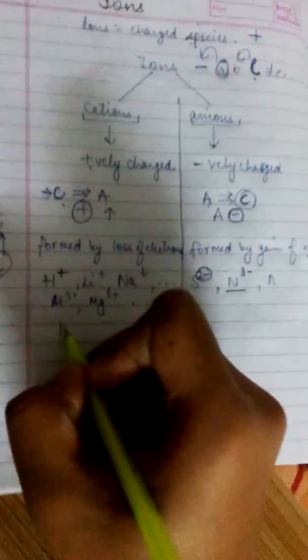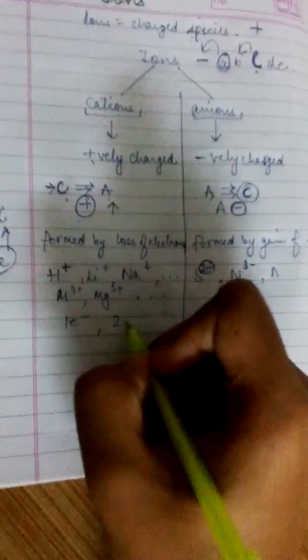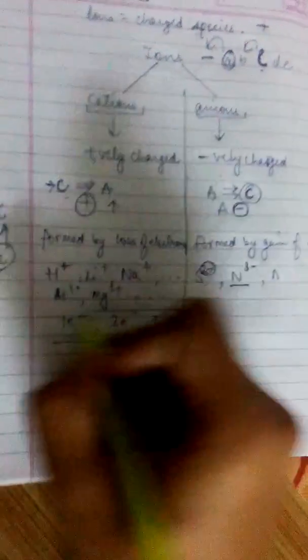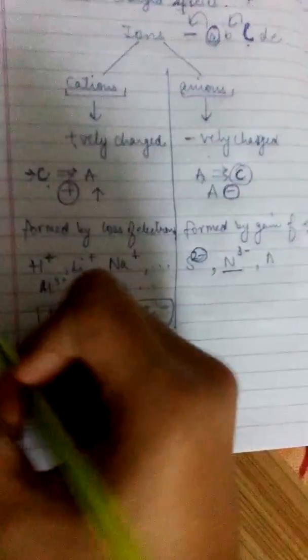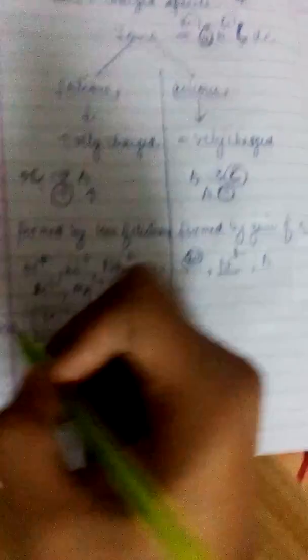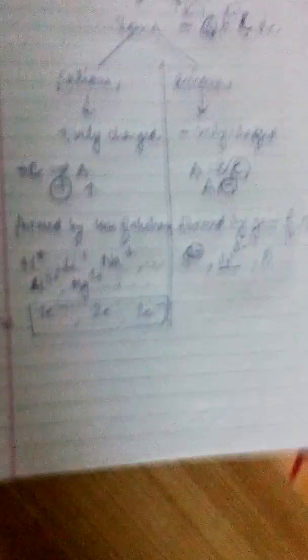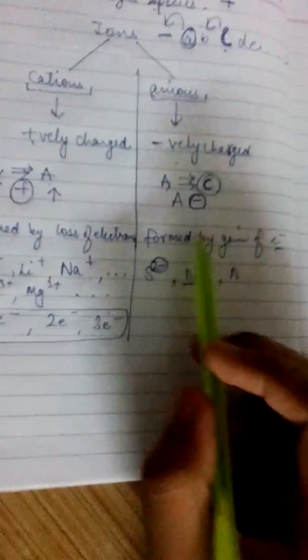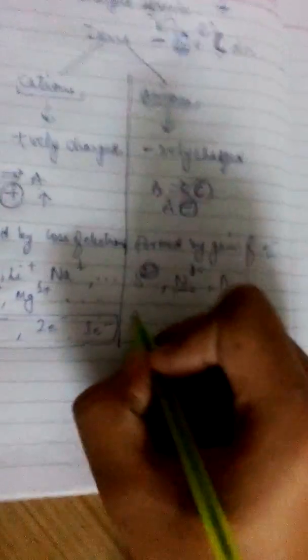There are various categories of cations. The ones which lose one electron, which lose two electrons, which lose three electrons. And for anions, there is a gain of electrons.